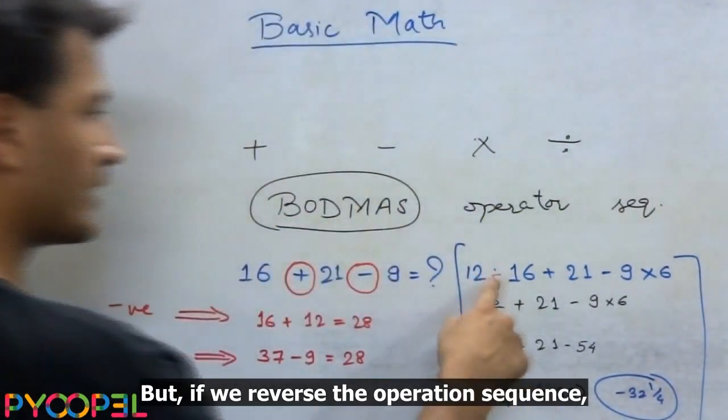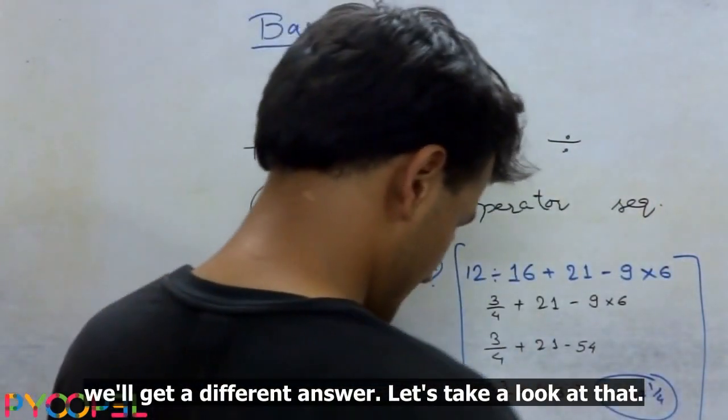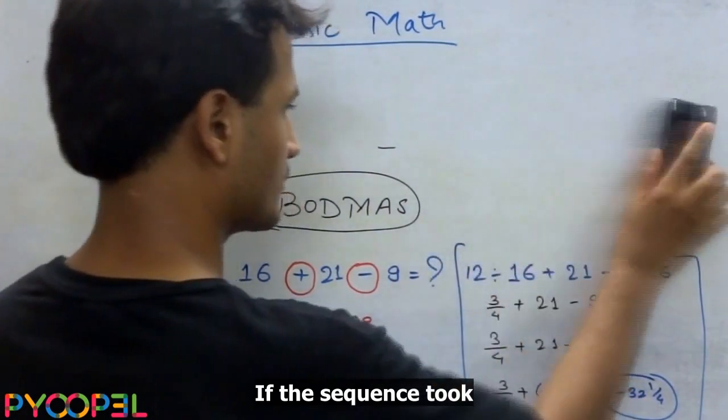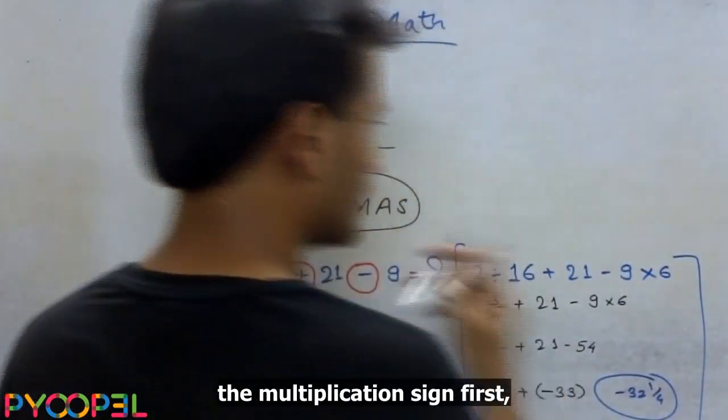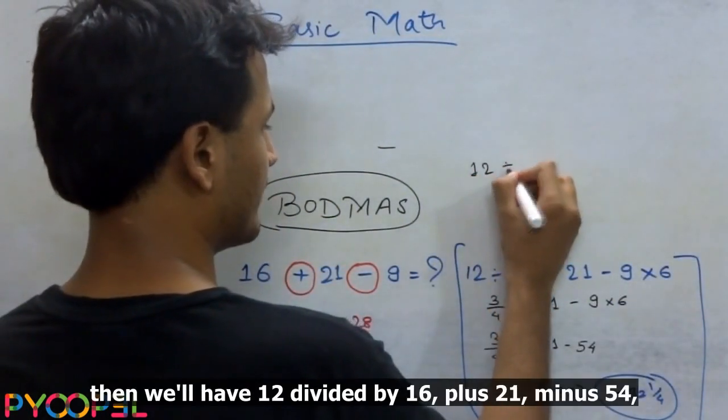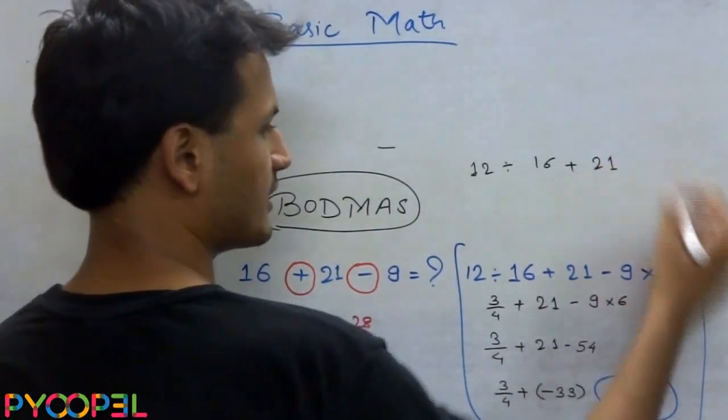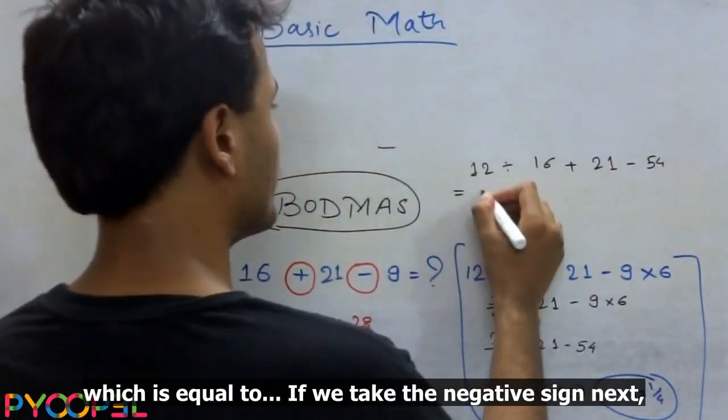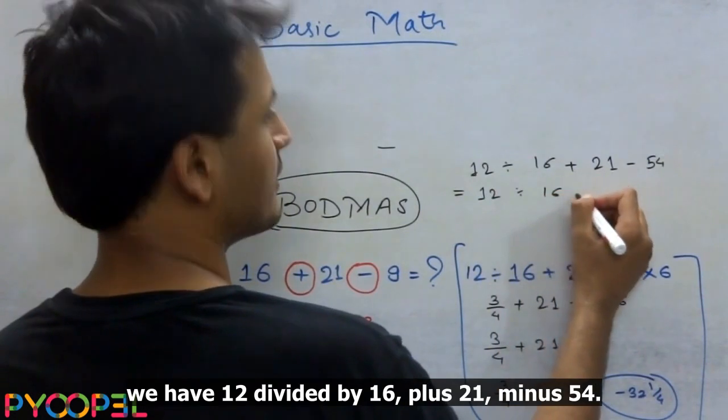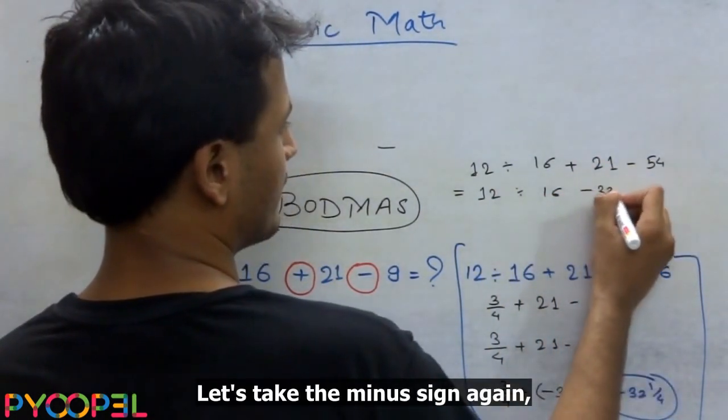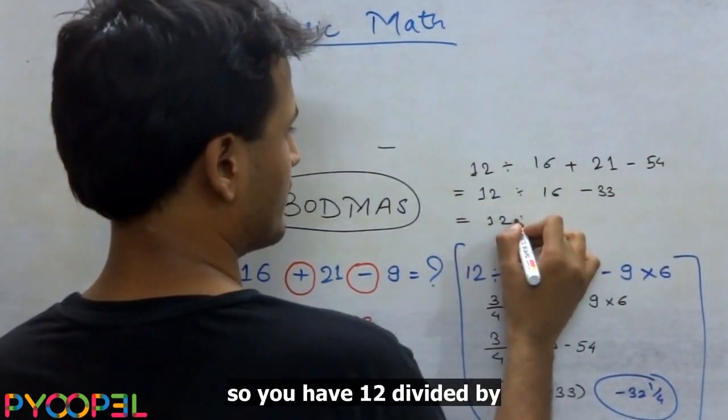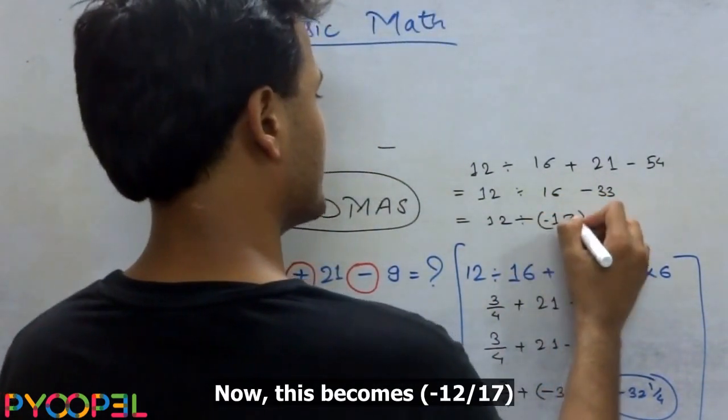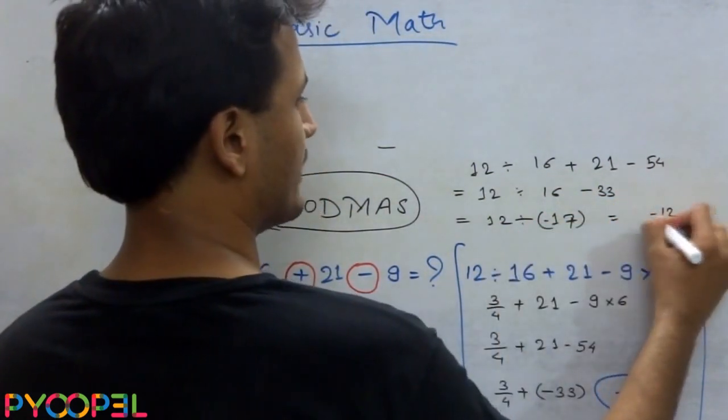But if we reverse the operation sequence, we will get a different answer. Let's take a look at that. If the sequence took the multiplication sign first, then we will have 12 divided by 16 plus 21 minus 54 again minus 33. Now let's take the minus sign again. So you have 12 divided by 16 minus 33 is 17 which is minus 17. Now this becomes minus 12 by 17.